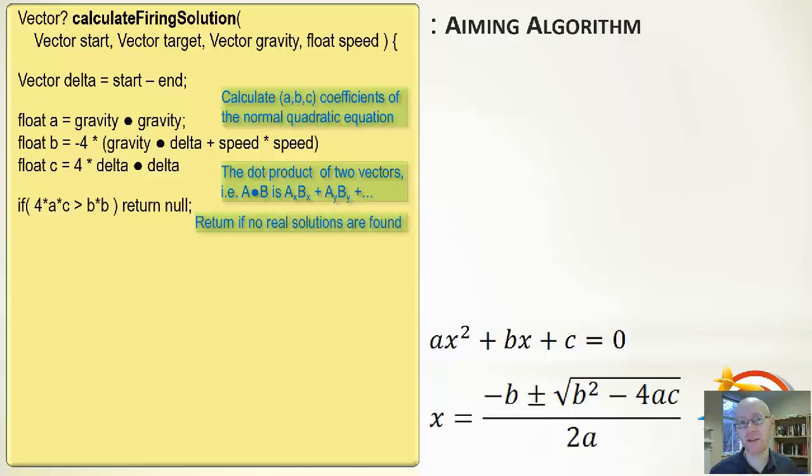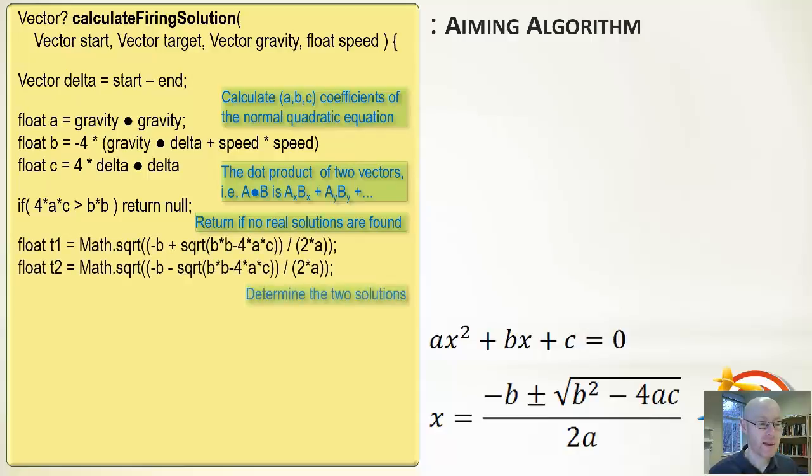Then we're checking to see, do we have any real solutions? If 4ac is bigger than b², this will give us a negative number which we'll try to take the square root of. So no real solutions, we return null. This represents the case where we can't actually hit our target location. If that doesn't trigger, it means we can hit our target solution. In this case, we work out our two times, t1 and t2, that we can use, plugging them into the equation at the bottom.